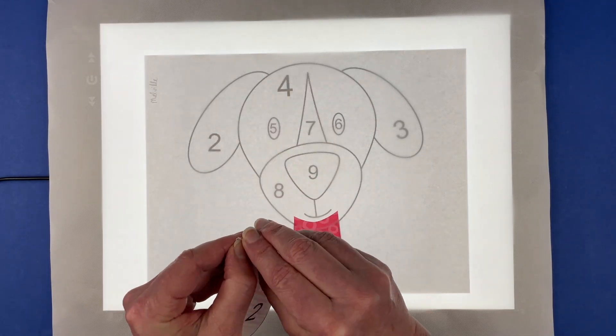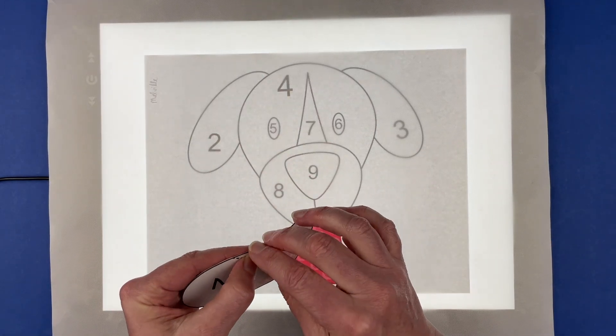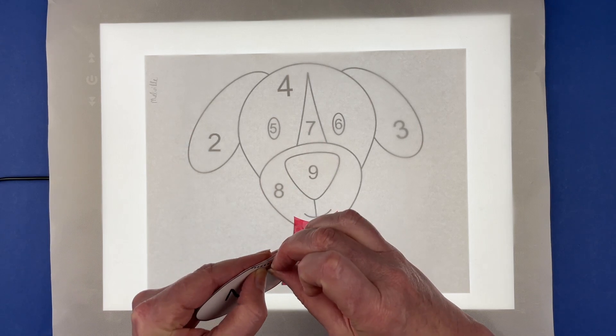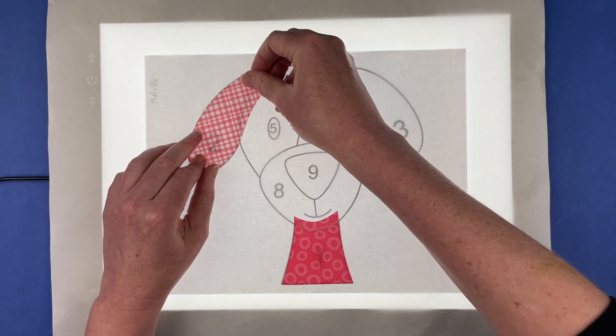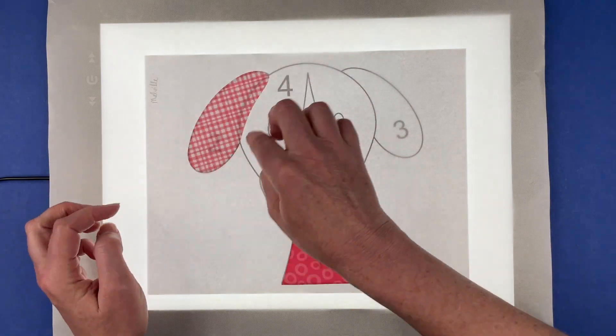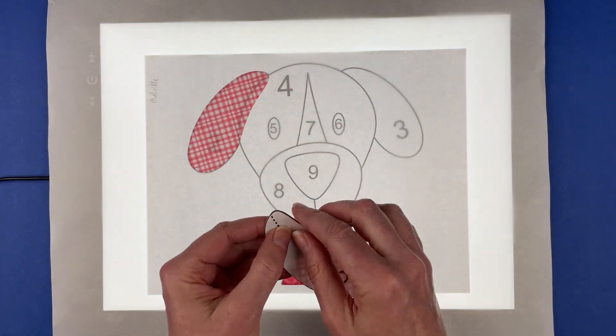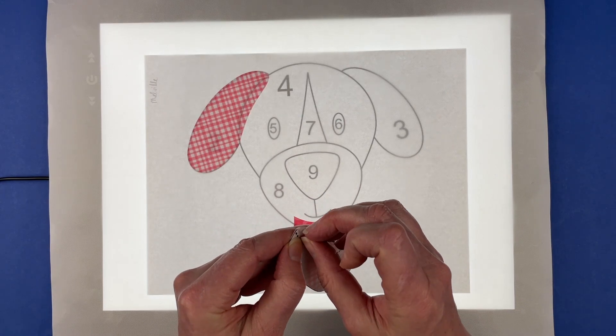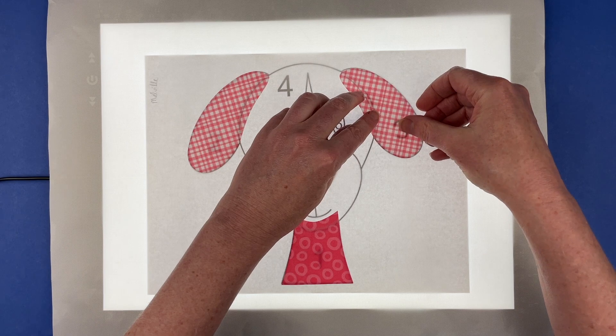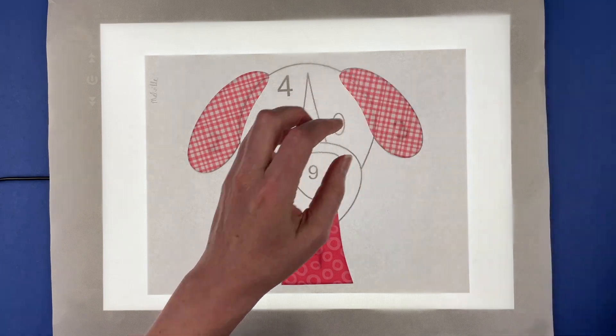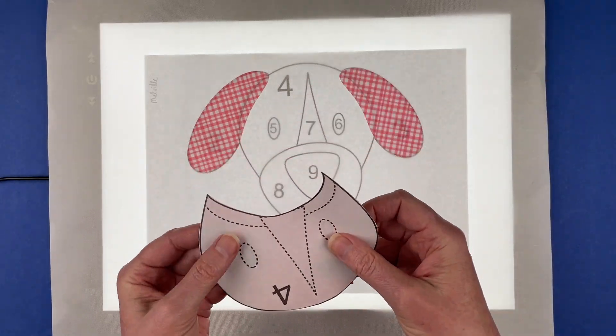Number two is one of his ears, and you just line it up so that the edges all conform to those lines. Three is the second ear, and four is the top part of his head.